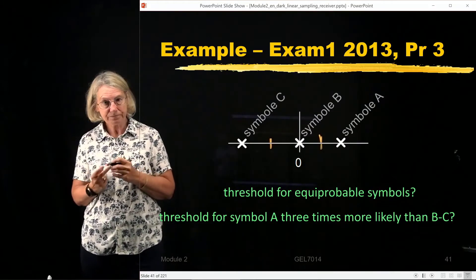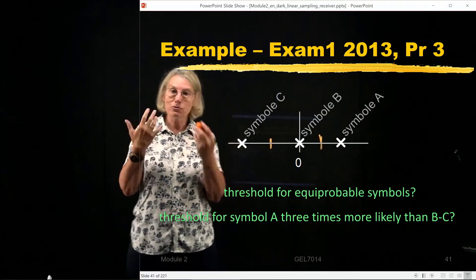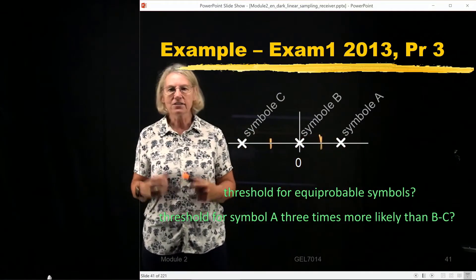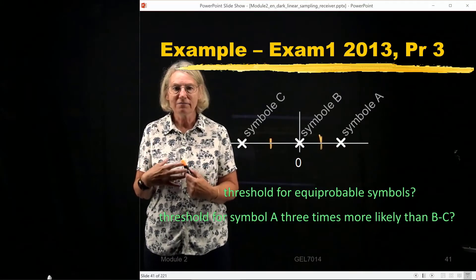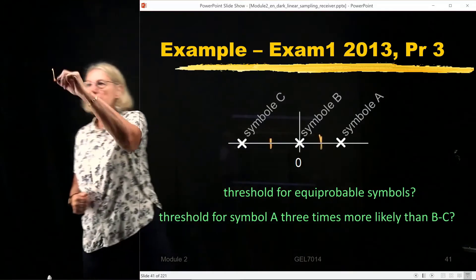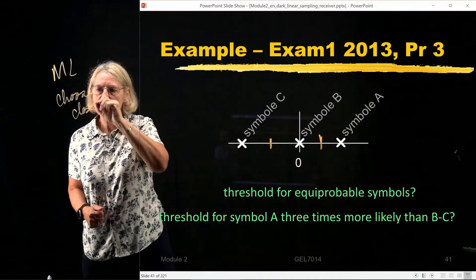Because essentially we're going to say, choose the closest one. Z is going to fall somewhere on this. And I know that my maximum likelihood rule is, maximum likelihood says choose closest. That's the thing you have to remember. Choose closest.